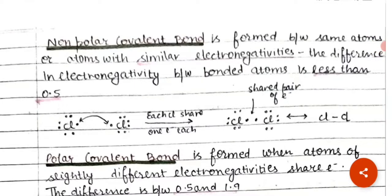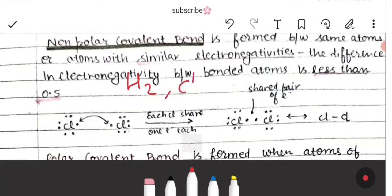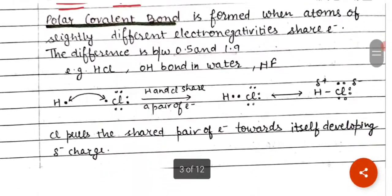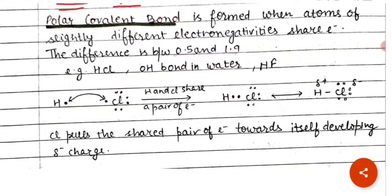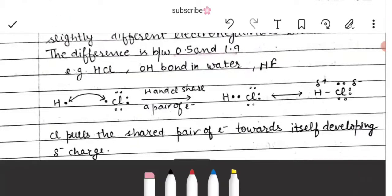In non-polar covalent bonds, the same atoms share electrons with no electronegativity difference — or if it is less than 0.5. Examples include H2 and Cl2. But if there is a bond between atoms where the electronegativity difference is 0.5 to 1.9 — such as HCl, HF, or the OH bond in water — that is called a polar covalent bond.